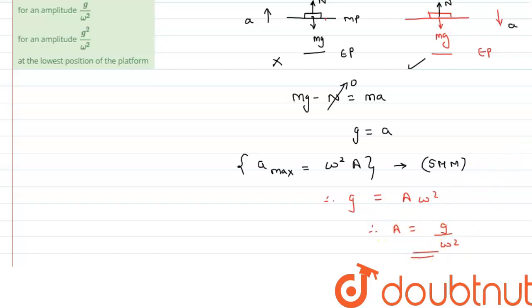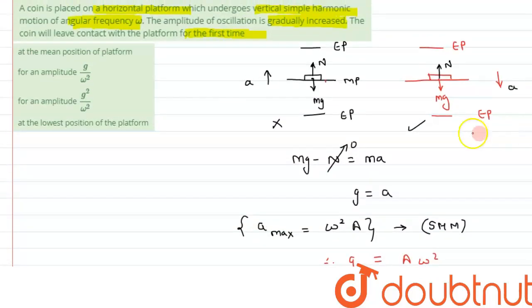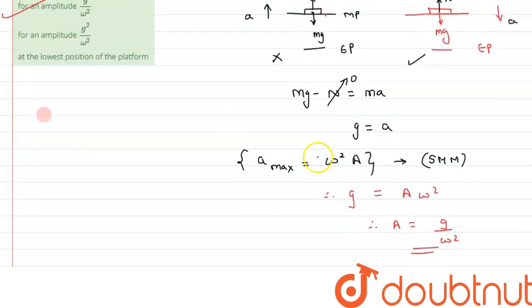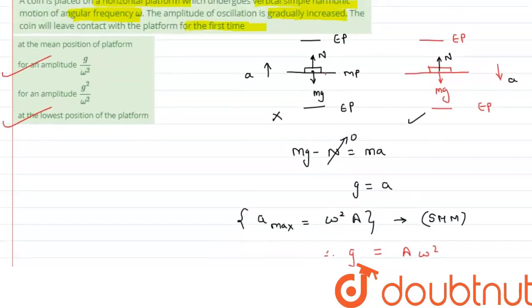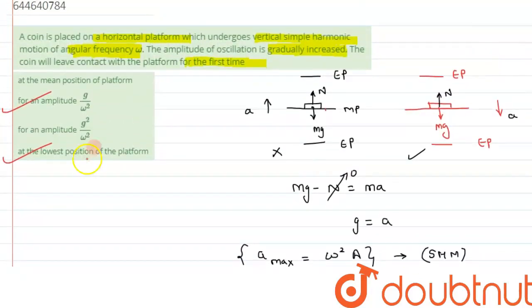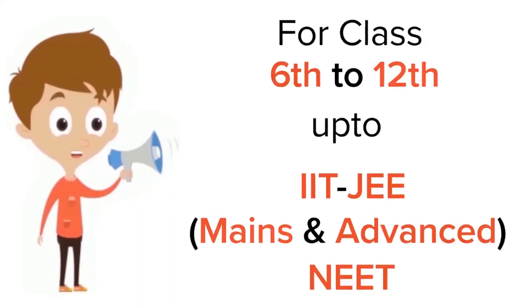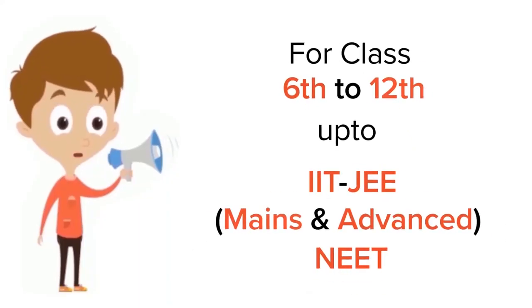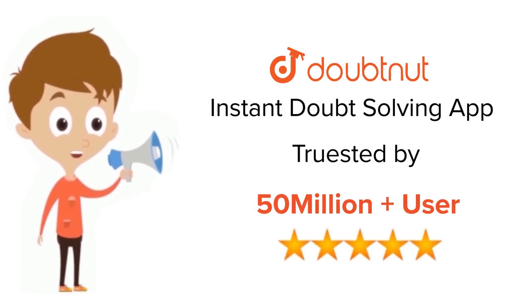The amplitude at which the coin first leaves contact is g by omega squared, and this occurs at the lowest position of the platform. I hope you have understood the concept. Thank you for watching.